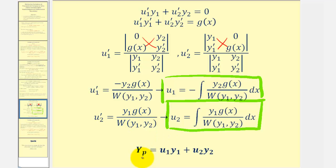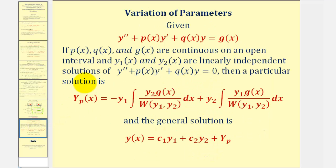Now we have everything we need. Here is y_p, and we now know the formulas for u₁ and u₂ using the method of variation of parameters. To summarize: to use variation of parameters to solve a linear second-order non-homogeneous differential equation, we find a particular solution using the formula for y_p, and then form the general solution y of x.